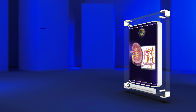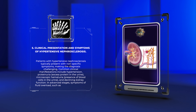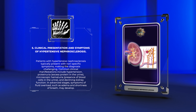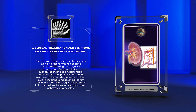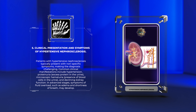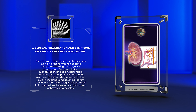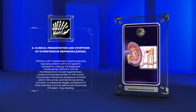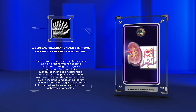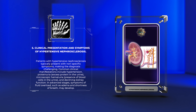Patients with hypertensive nephrosclerosis typically present with nonspecific symptoms, making the diagnosis challenging. Common clinical manifestations include hypertension, proteinuria (excess protein in the urine), microscopic hematuria (presence of blood cells in the urine), and declining kidney function. In advanced stages, symptoms of fluid overload, such as edema and shortness of breath, may develop.